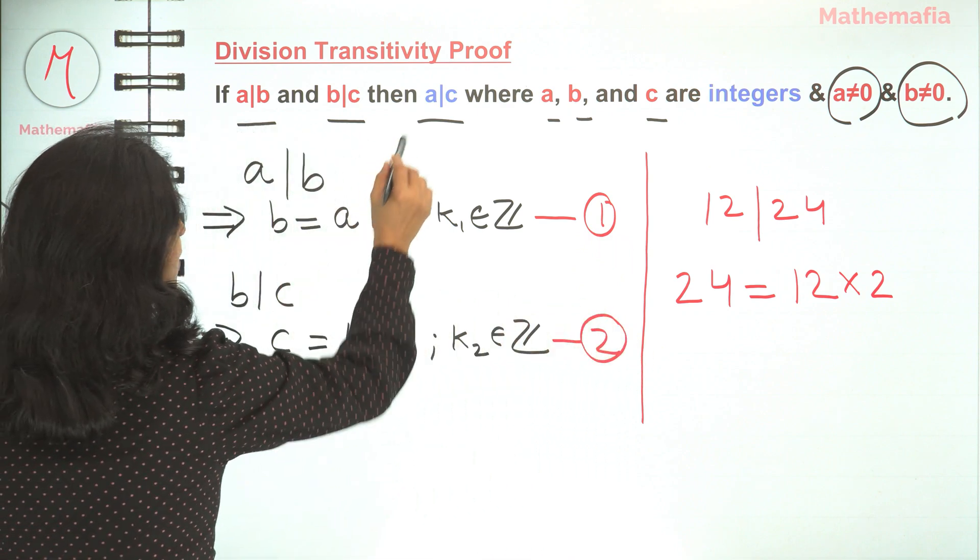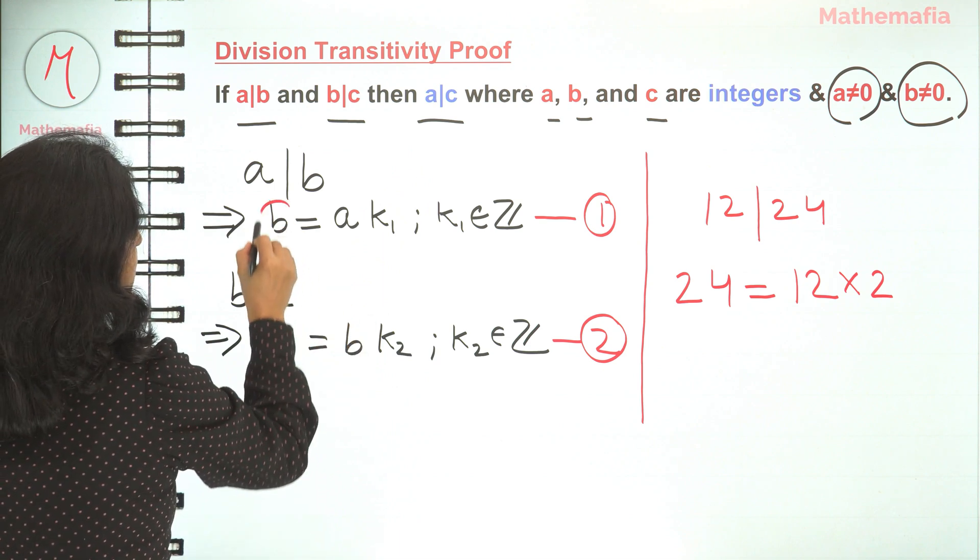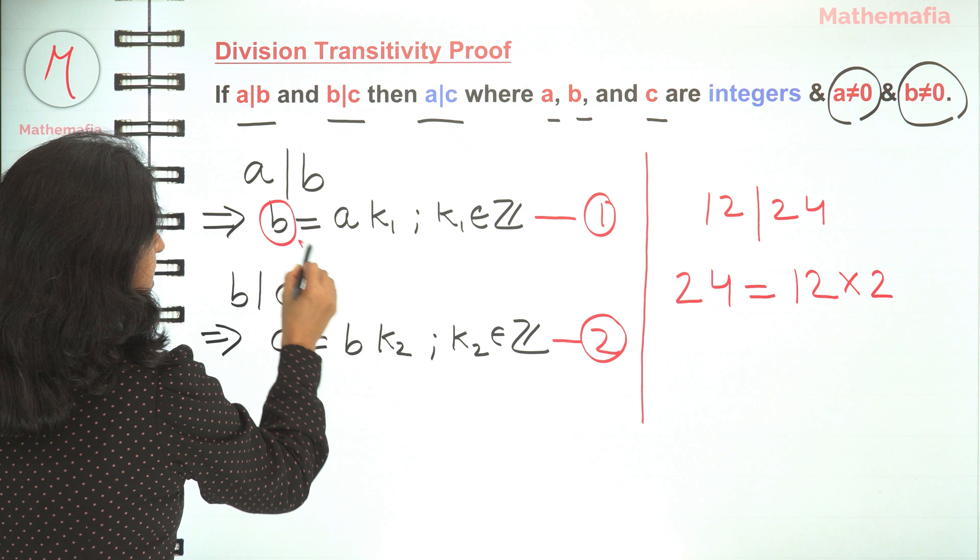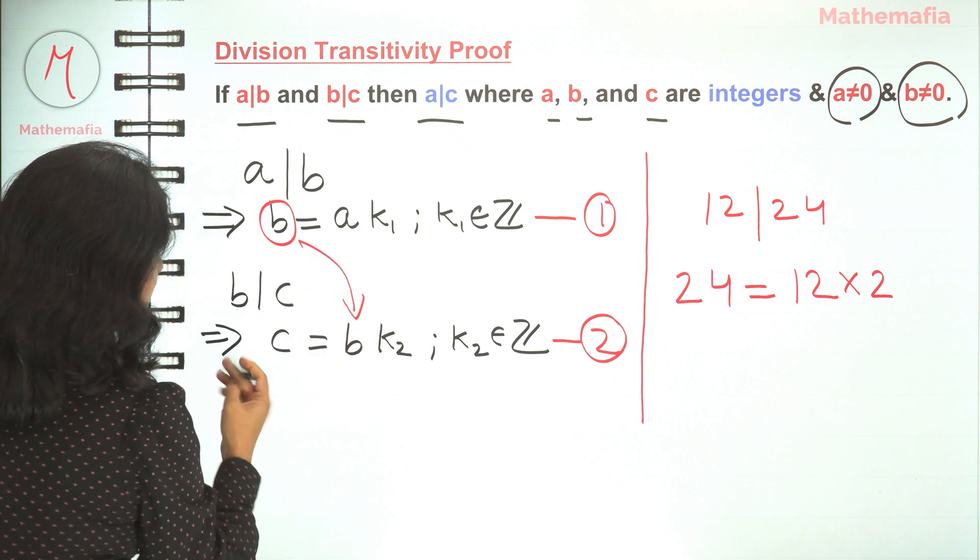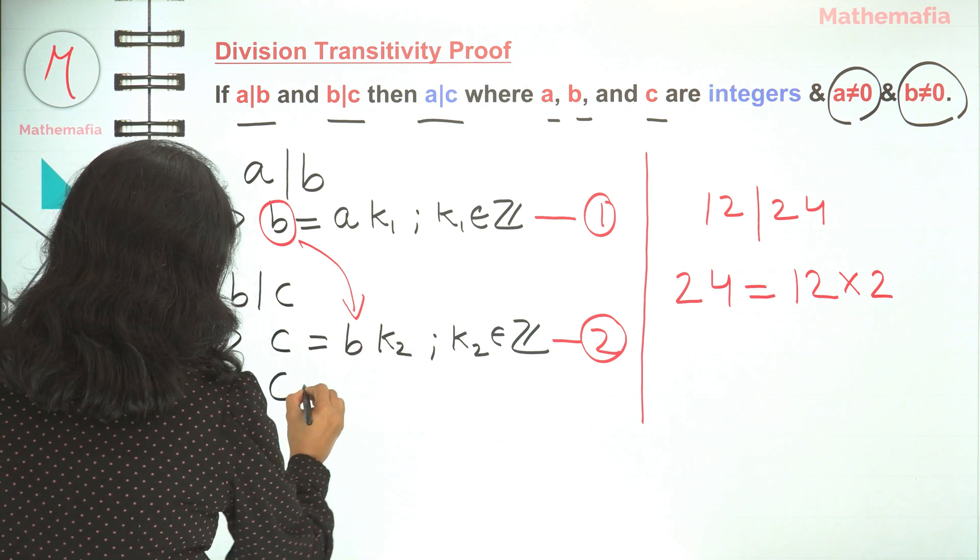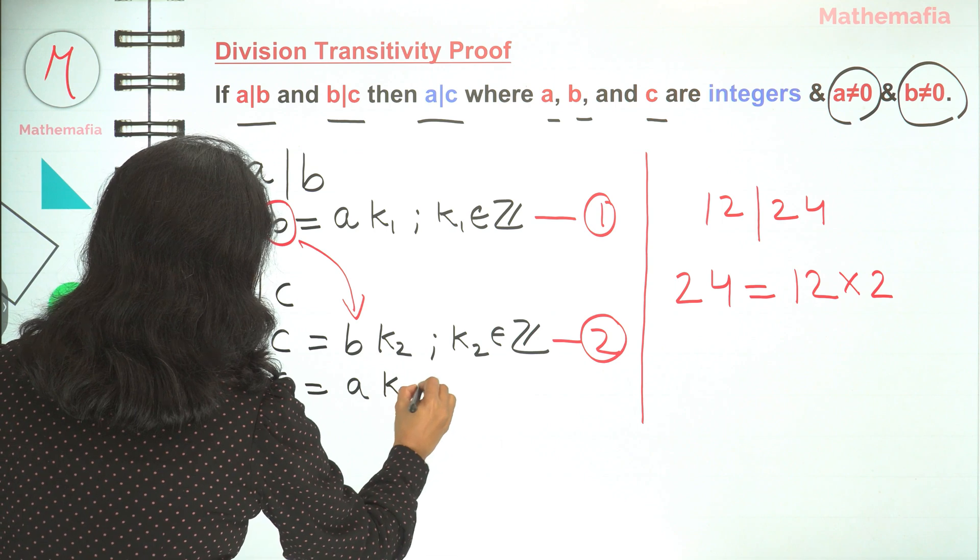And we have to prove that a divides c. We will put the value of b from equation number 1 into equation number 2. So c becomes a times k1 times k2.